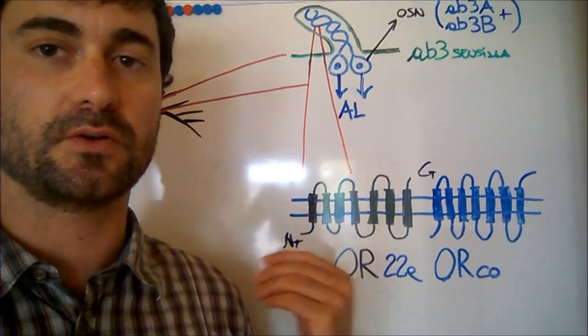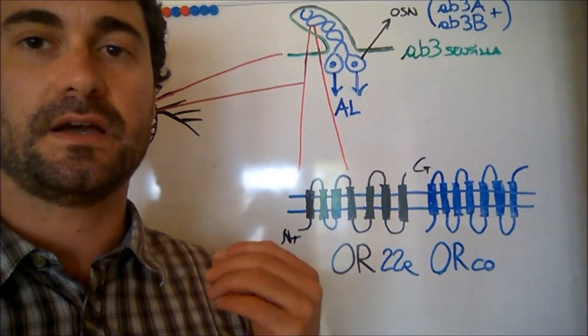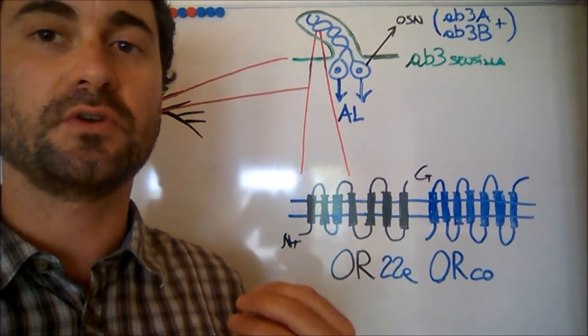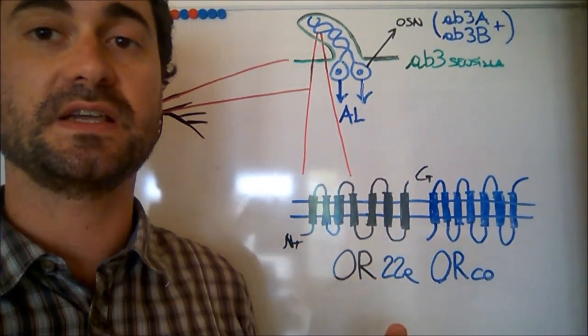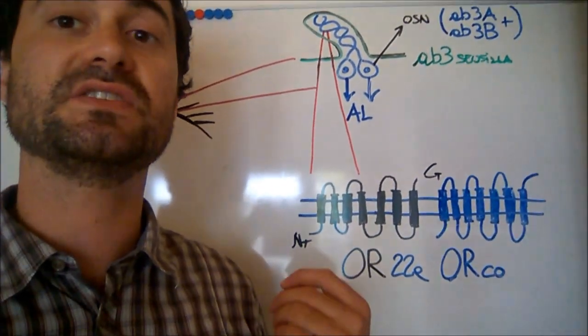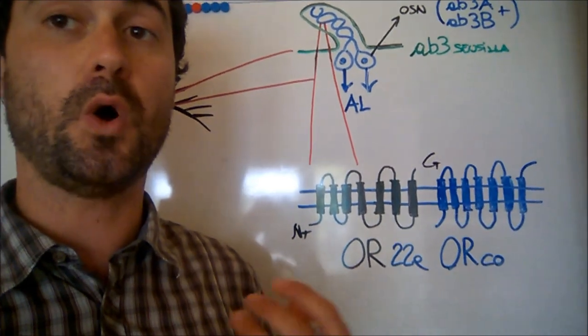What we know is that they are co-expressed with this coreceptor, and they activate ionotropic or metabotropic mechanisms in the plasma membrane of olfactory sensory neurons, starting from their sensing of specific odorants.